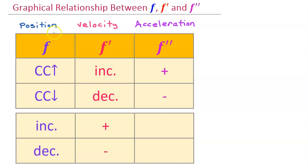Many videos ago, we learned about the graphical relationship between f, f prime, and f double prime. Now I need you to make the connection that a position function can be thought of as the original function, like f. Velocity is the derivative of position, like f prime. Acceleration is the derivative of velocity, or you could think of it as the second derivative of position, like f double prime.